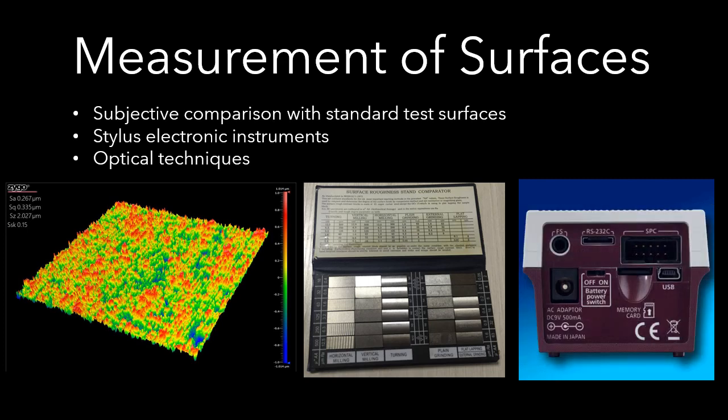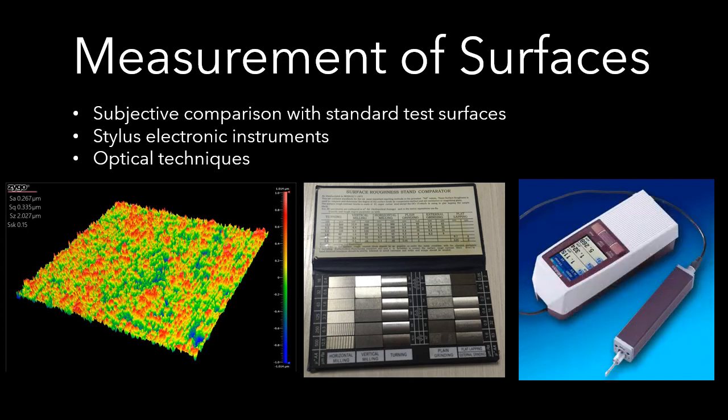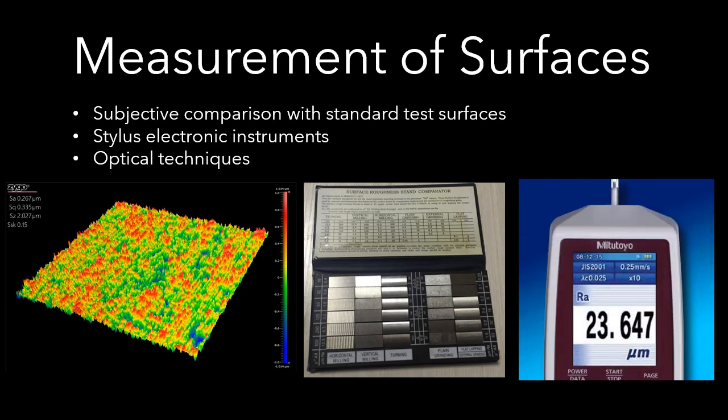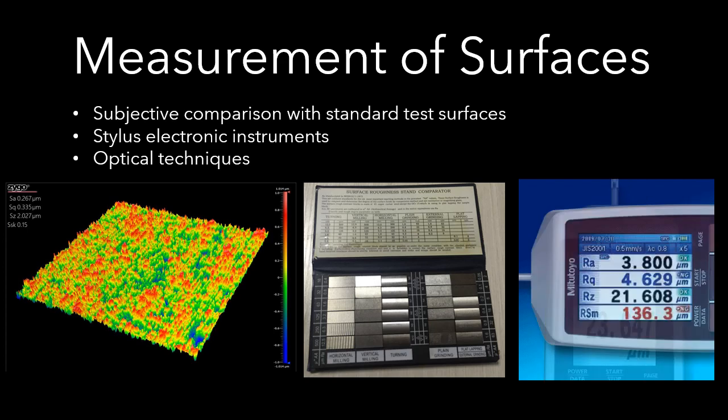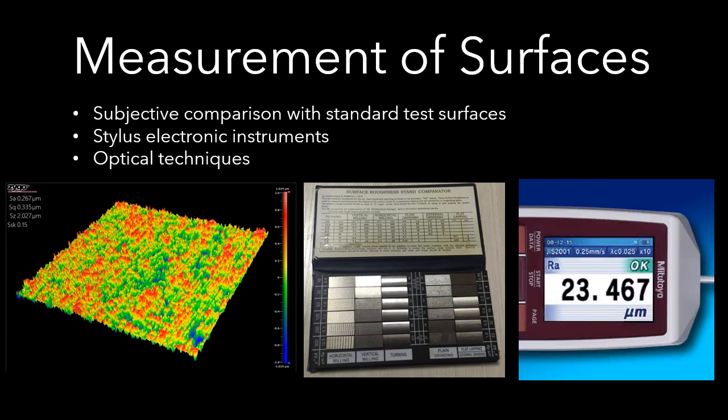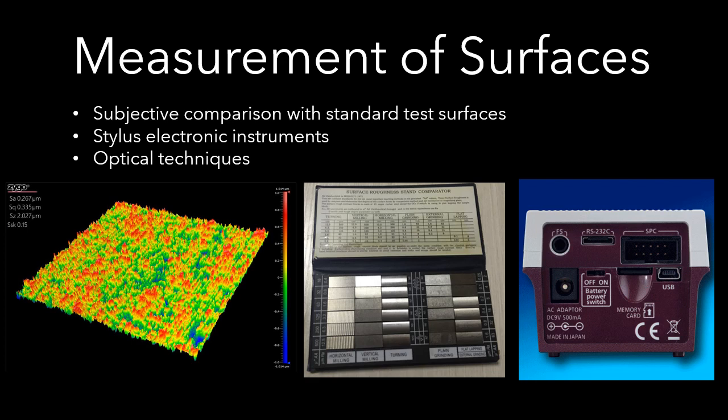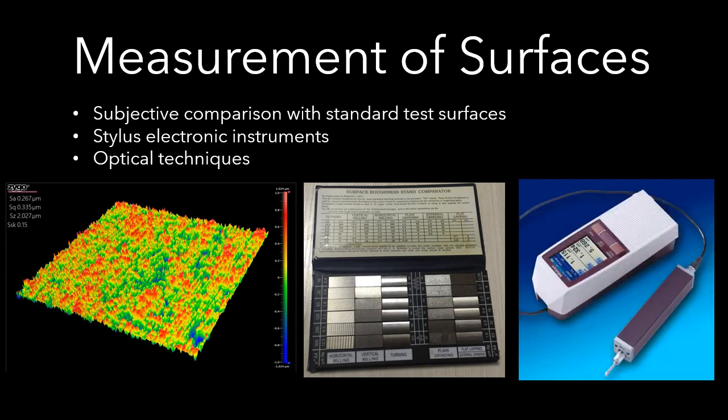There are three methods to measure surface roughness. First, comparison with standard test surfaces, such as the fingernail test. Second, stylus electronic instruments. Third, optical techniques.